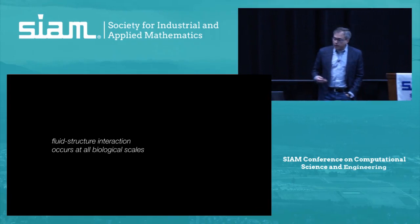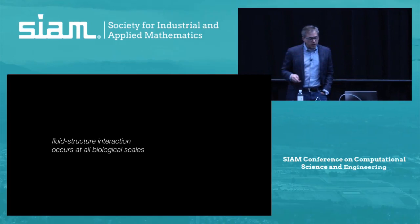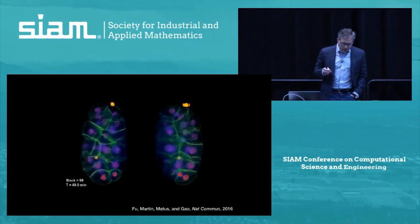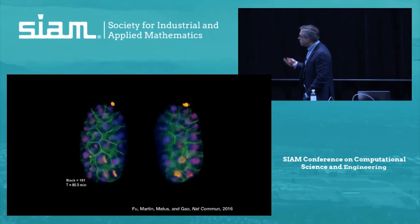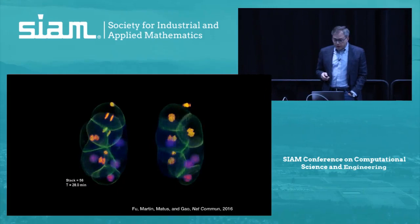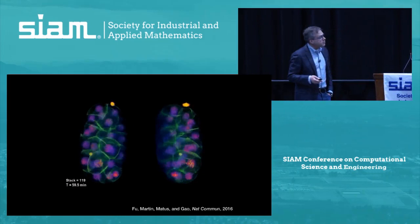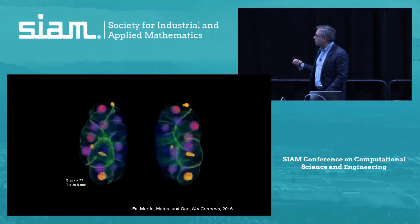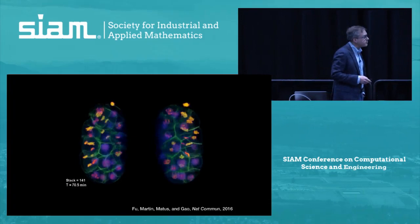Fluid structure interaction is ubiquitous in nature, and it occurs at essentially all biological scales. I wanted to start with some examples. This is an amazing movie obtained using tilted light sheet, selected plane illumination microscopy. It's live cell imaging of dividing cells early in embryonic development of C. elegans embryos. You can see flashes of light as the cell divides, as the chromosomes condense, segregate from each other, and then decondense during cell division. This is fundamentally a process that involves fluid structure interaction.